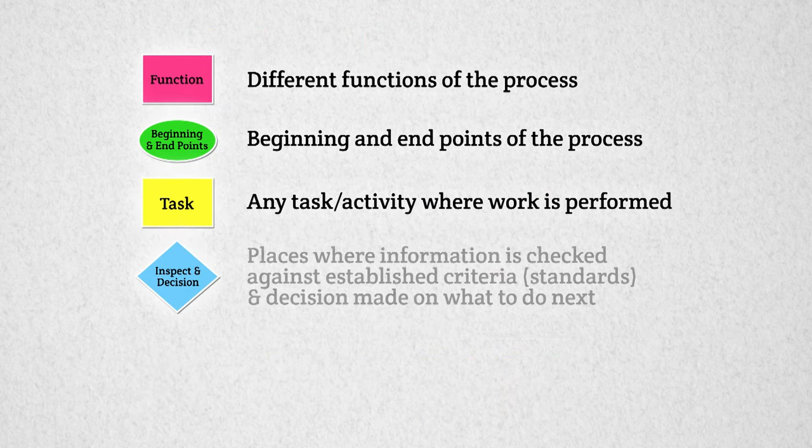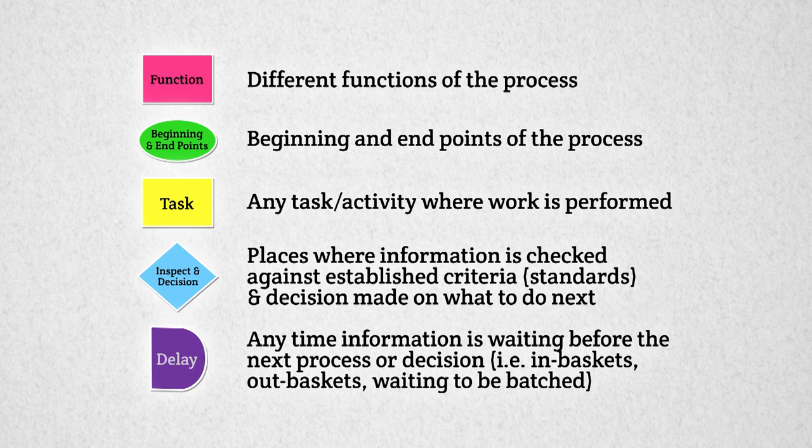Using color-coded post-it notes helps to make the process visible. For example, beginning and ending points of the process use green post-it notes. Pink post-it notes are used to identify functional areas. Any task or activity where work is performed uses yellow post-it notes.